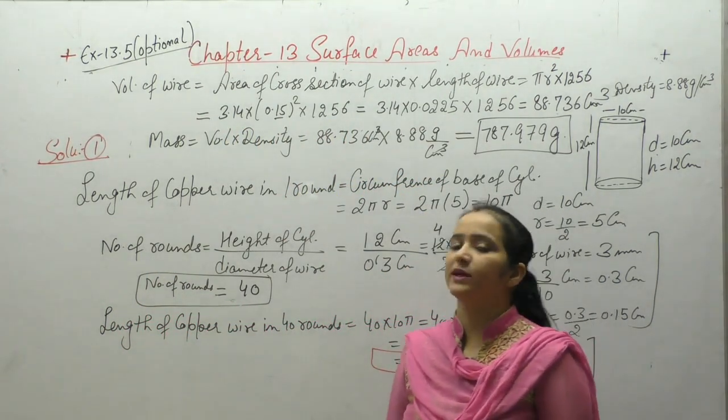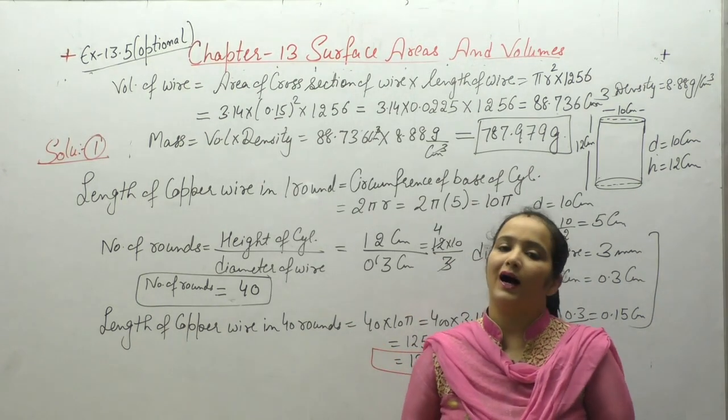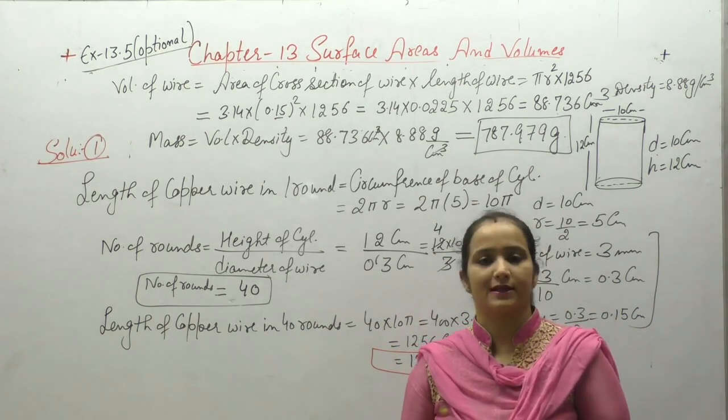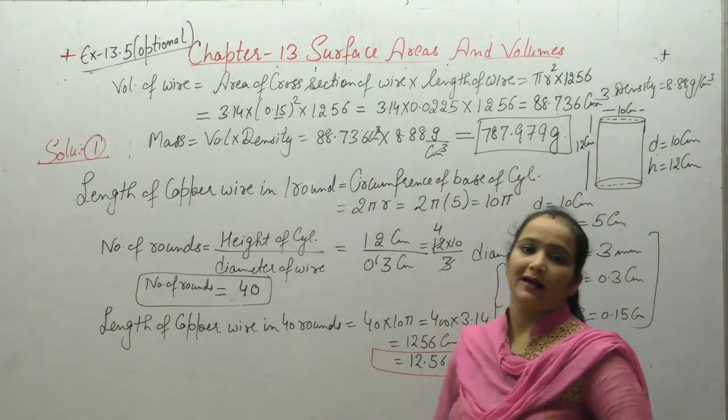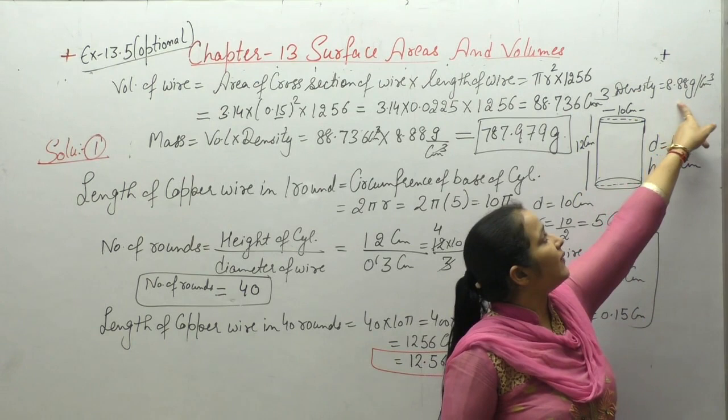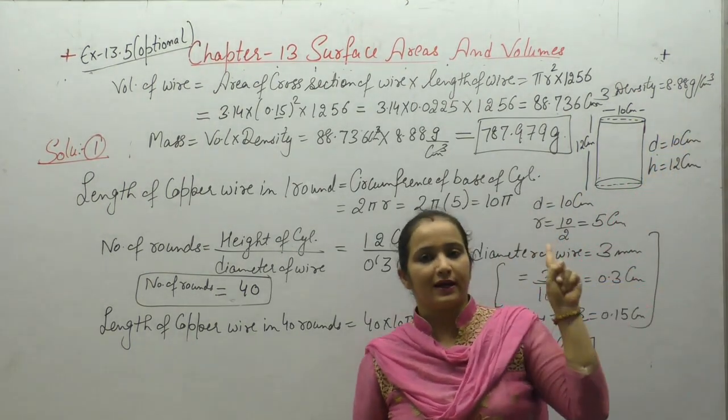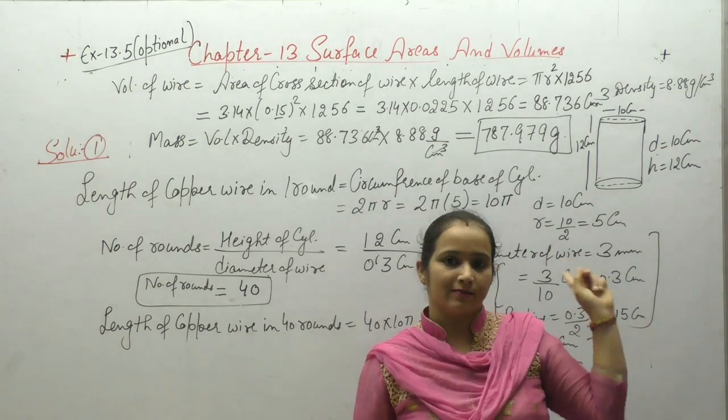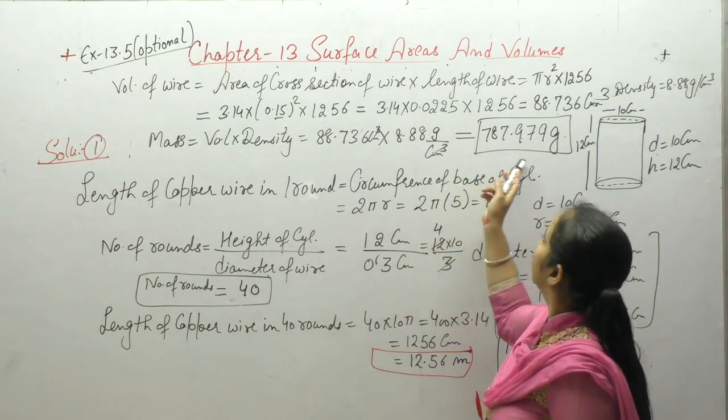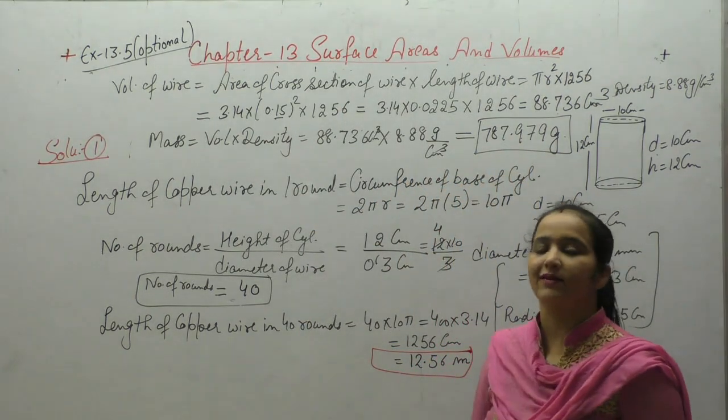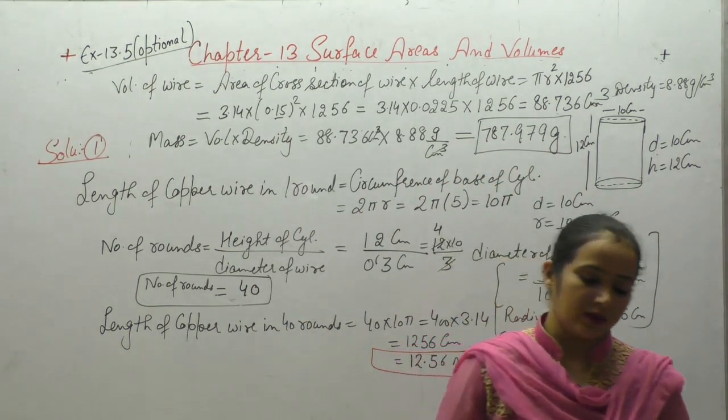Now we need to find mass. Mass equals volume into density. We can also write density equals mass upon volume. If you ever forget the formula for density, even from the units given you can figure out. Density value given is 8.88 grams per cm³. Grams means mass will be in grams upon cm³ volume. We applied the formula and multiplied. This is 787.979 grams. Note it down.